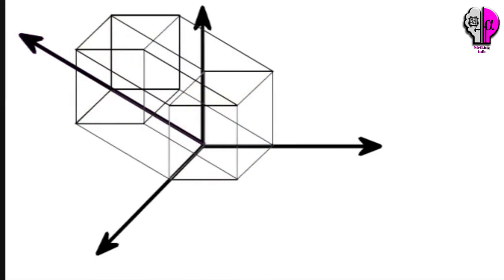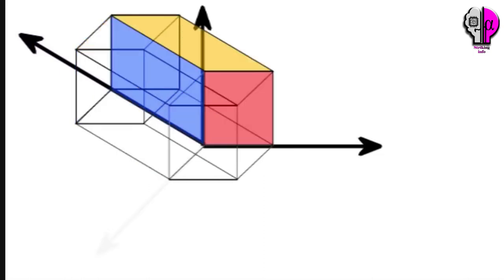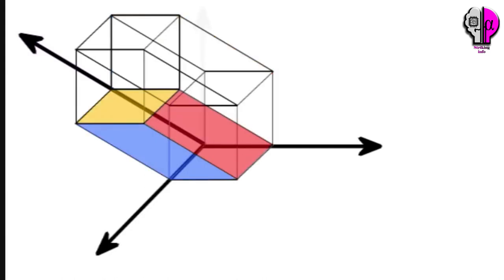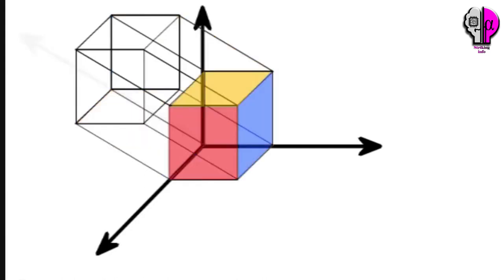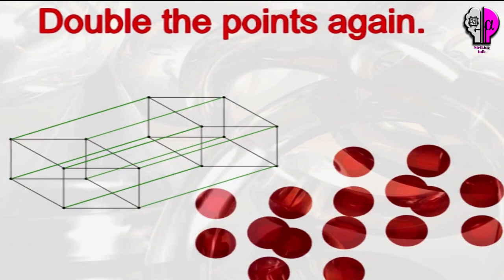If you remove any one of the four axes you will go back to three axes each of which is 90 degrees to the other two. Therefore each of the four axes is 90 degrees to each of the other three. In the same way we can add a fifth, sixth, or seventh axis, each of which is 90 degrees to all the axes that came before it. Double the points again.